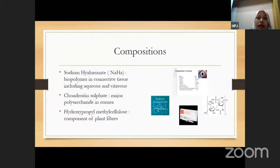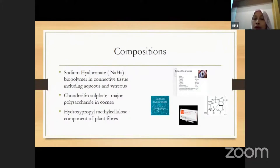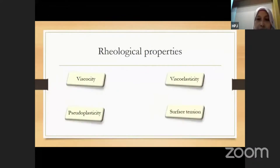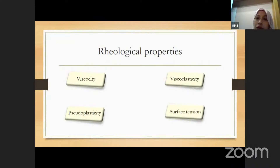Moving on to decomposition: it contains sodium hyaluronate, which is a biopolymer in connective tissue also present in aqueous and vitreous. It also has chondroitin sulfate, which is a major polysaccharide in the cornea, and hydroxypropyl methylcellulose, which is a component of plant fibers. It has what we call rheological properties, consisting of viscosity, viscoelasticity, pseudoplasticity, and surface tension.